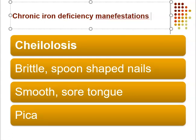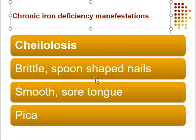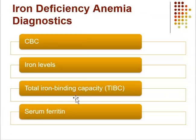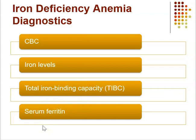Manifestations of chronic iron deficiency include cheilosis — cracks at the corners of the mouth — brittle spoon-shaped nails, a smooth sore tongue, and pica. Diagnostics include a CBC with differential, iron levels, total iron binding capacity, and serum ferritin. Ferritin is an iron storage protein produced by the liver, spleen, and bone marrow, which moves iron into the blood when dietary intake is decreased.